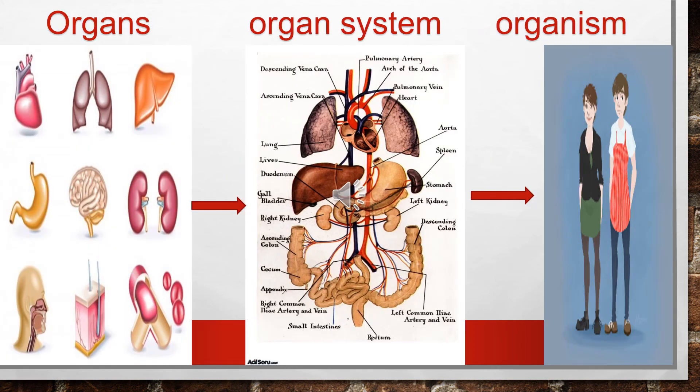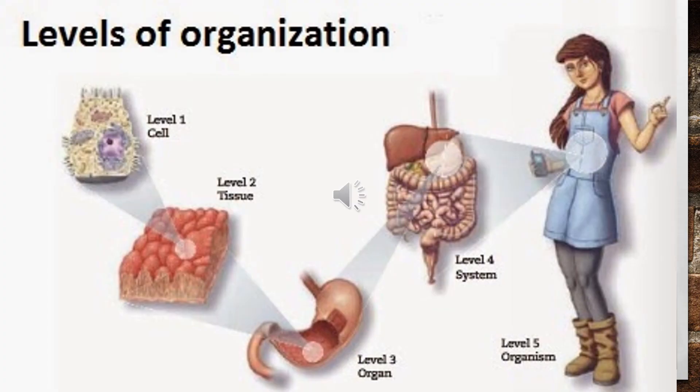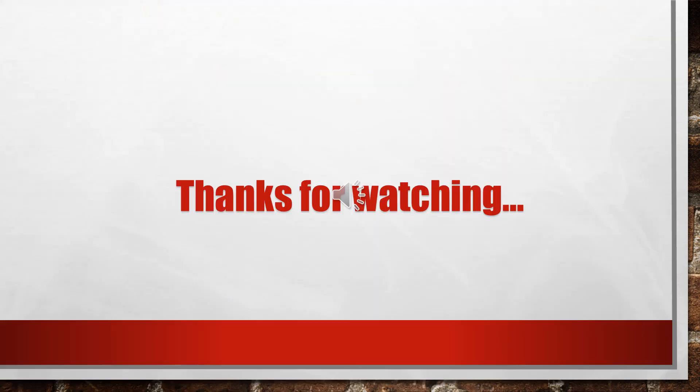Here you can see organs, organ system, and organism. Levels of organization: cell, tissue, organ, organ system, and organism.